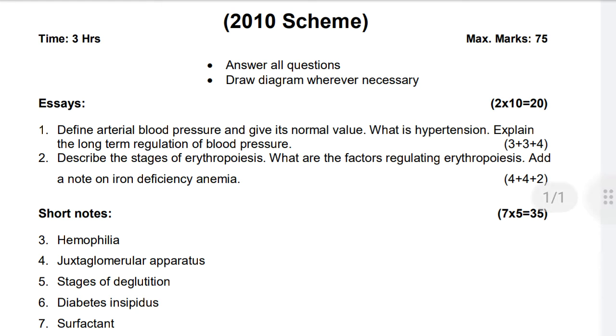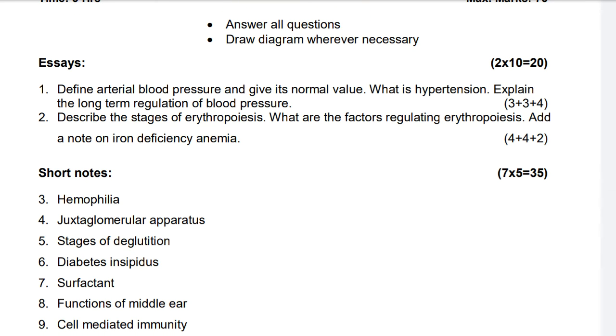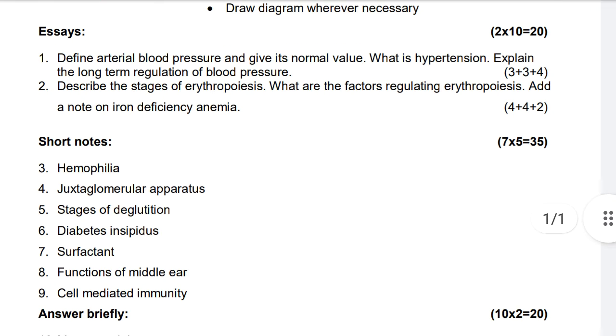Question number second: Describe the stages of erythropoiesis, 4 marks. What are the factors regulating erythropoiesis, 4 marks. Add a note on iron deficiency anemia, 2 marks. Total 10 marks.